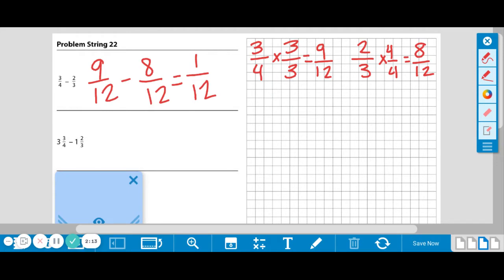Let's look at our next one: 3 and 3 fourths minus 1 and 2 thirds. As always with problem strings, we want to use our previous work to help solve problems. If we notice, these fractions are the same from above, so you have already solved for the fractional amount. The only part that we need to do that is new is 3 minus 1, which is 2. And we need to include the fraction that we found earlier, which was 1 twelfth. So the answer is 2 and 1 twelfth.